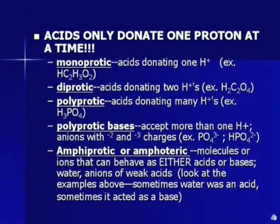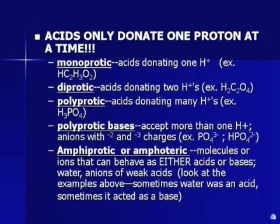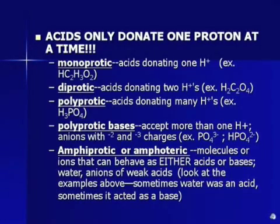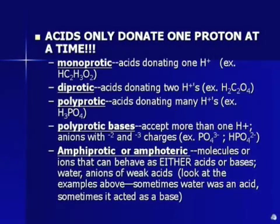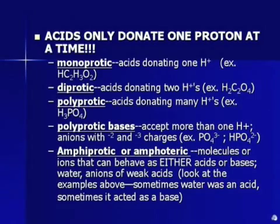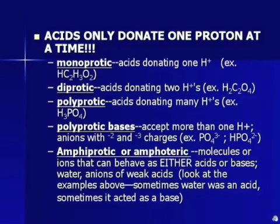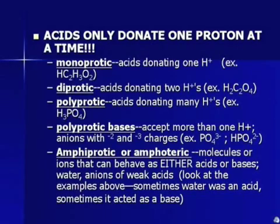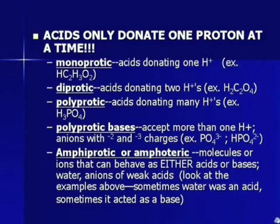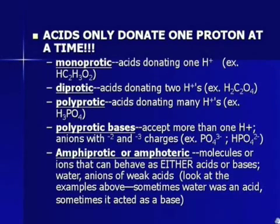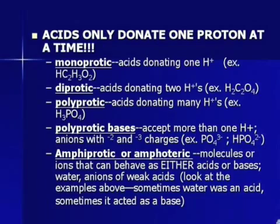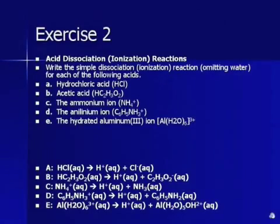Polyprotic bases accept more than one hydrogen. So they are usually anions with negative two or negative three charge because you're trying to get to neutral. So something like PO4 3- or HPO4 2-. Amphiprotic or amphoteric. I usually use the term amphoteric, but be familiar with both terms. They mean the same thing. Molecules or ions that can behave as either acids or bases. Water, anions of weak acids. Remember when we were writing the reactions, water could be a base or it could be an acid. And so if it can either be an acid or base, if it can accept a hydrogen or lose a hydrogen and still be a substance, it is amphoteric.